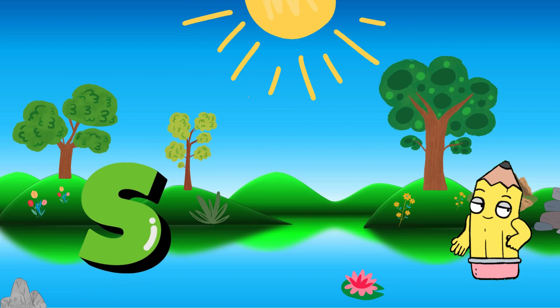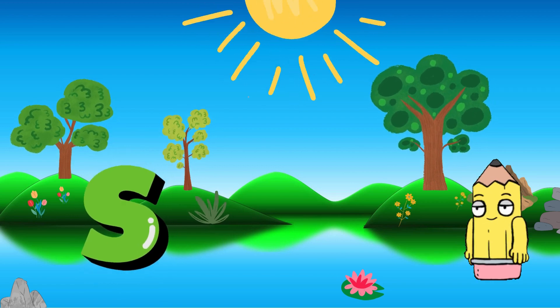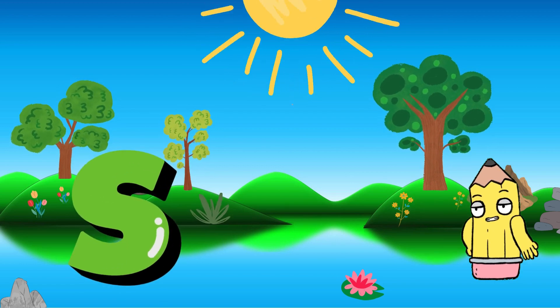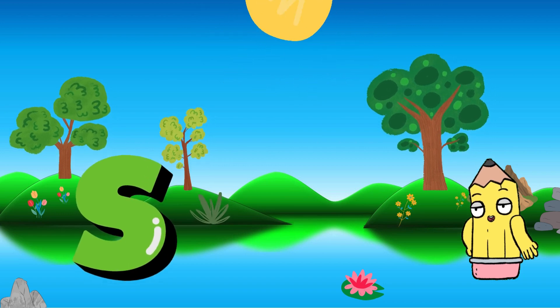Soar with the letter S. Can you say it? S. Splendid! S is for Sun, smiling down on us in our alphabet exploration.